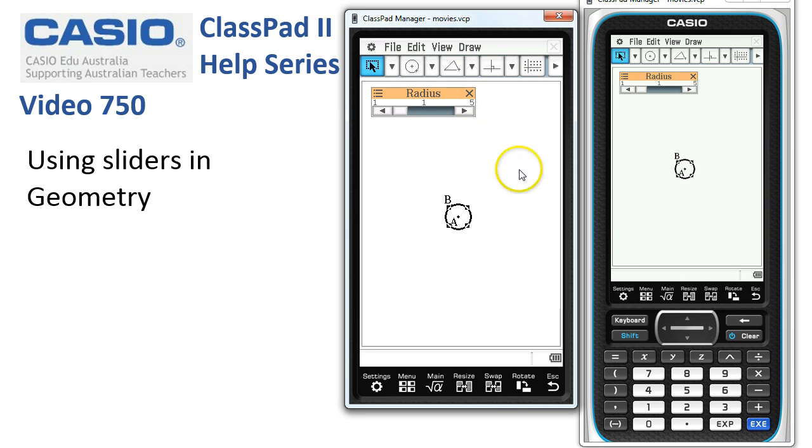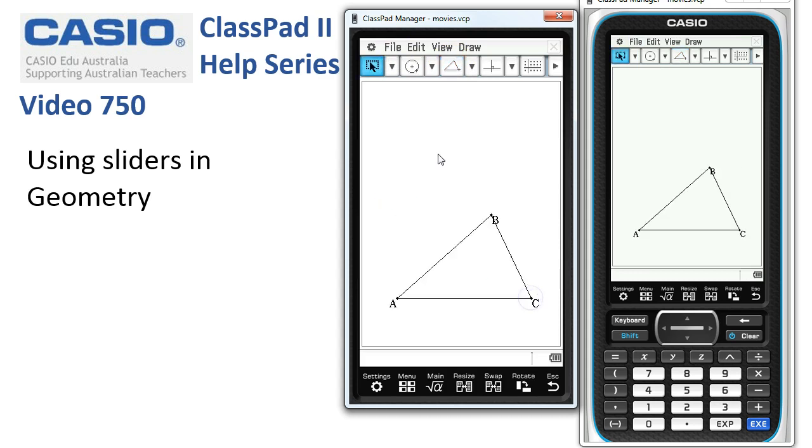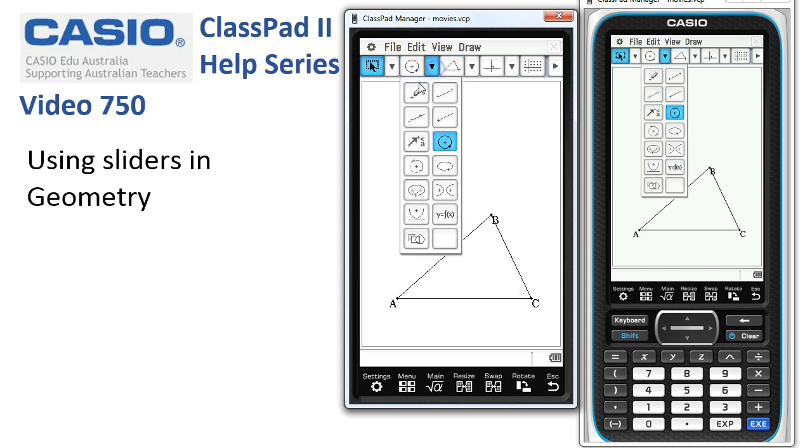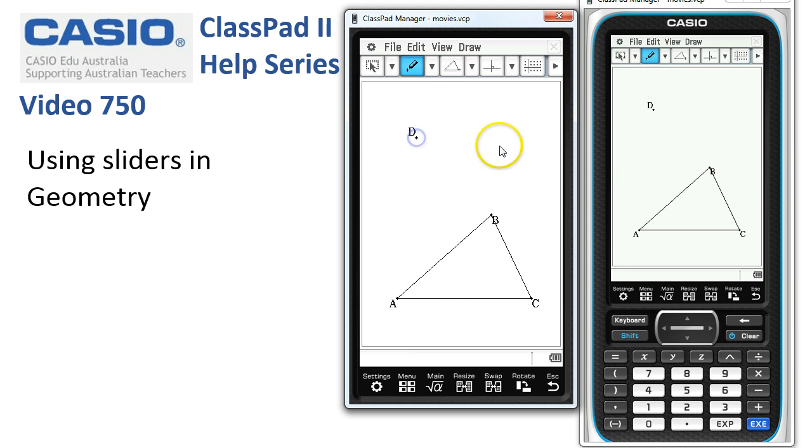Now the last thing that we can do is actually take a point, so we can change the distance between a couple of points. So I'll tidy everything up again here, and let's take a triangle down here, and maybe I'll use the point tool to put a point up over here.